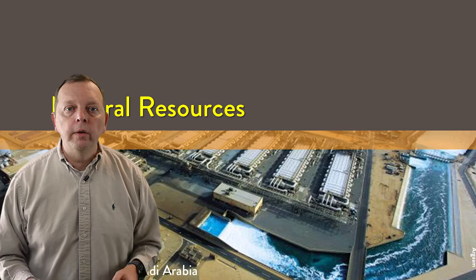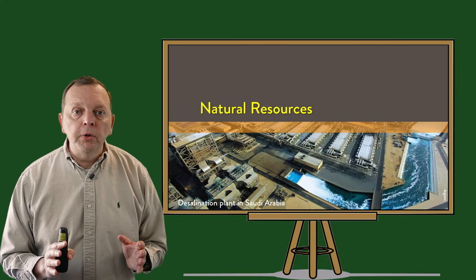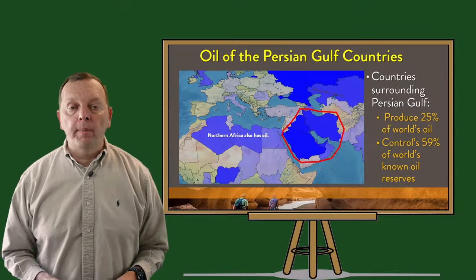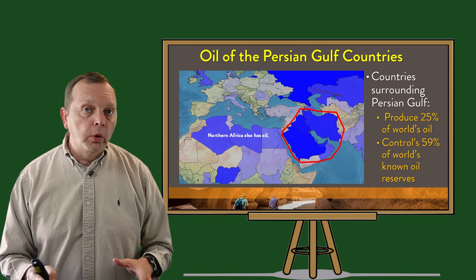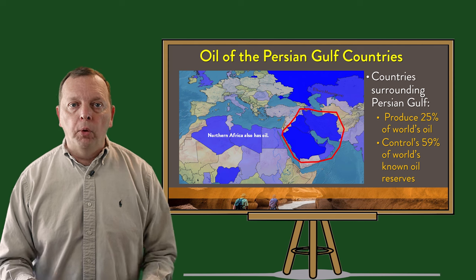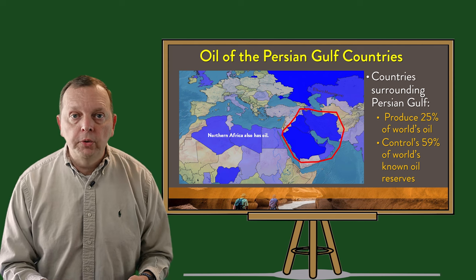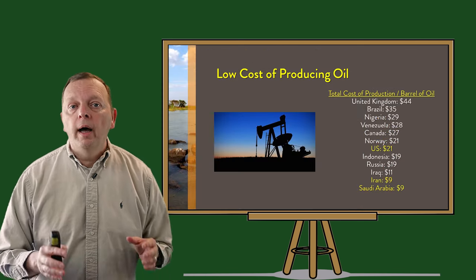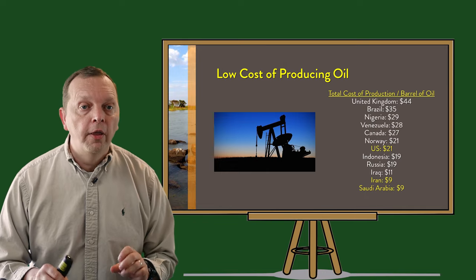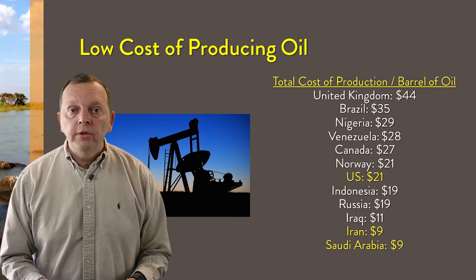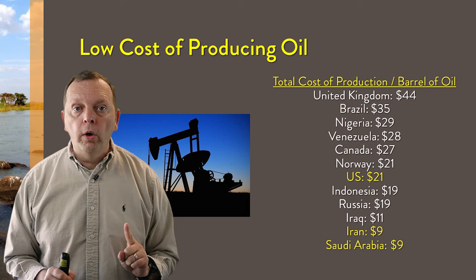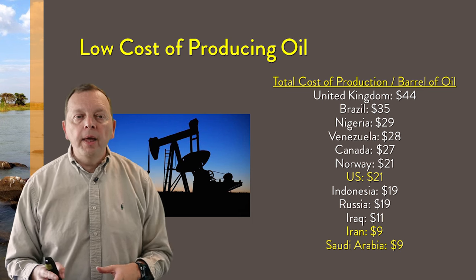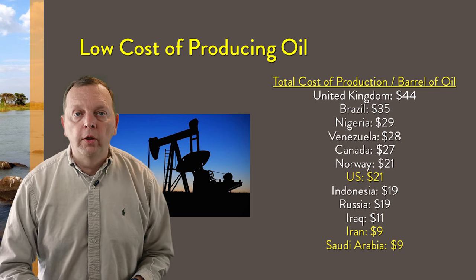Despite having only 6% of the world's population, the Middle East and North Africa has 59% of the world's proven oil reserves and 45% of the proven natural gas reserves. In a world that still runs on fossil fuels, this makes the region extremely important to the world's economies. For oil-producing countries, oil is the major driver of the economy, and their oil is much cheaper to extract — it costs Saudi Arabia only $9 to pump one barrel of oil, compared to as much as $21 in the United States, meaning Saudi Arabia easily profits $10 more per barrel.